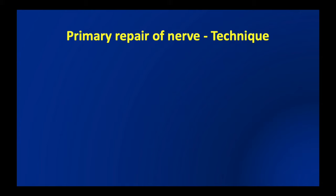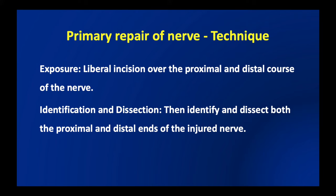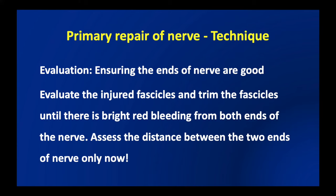Primary nerve repair is the ideal repair, especially when done early, and can be done in different ways. First, a liberal incision over the proximal and distal course of the nerve is needed for good visualization of the injured nerve ends. Then identification and dissection of both the proximal and distal ends is performed. After atraumatic dissection we determine whether there is a complete or partial transection, evaluate the injured fascicles, and trim them back both proximally and distally until there is a bright red bleeding from both ends of the nerve.